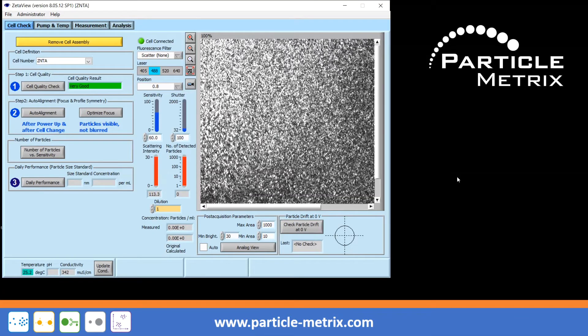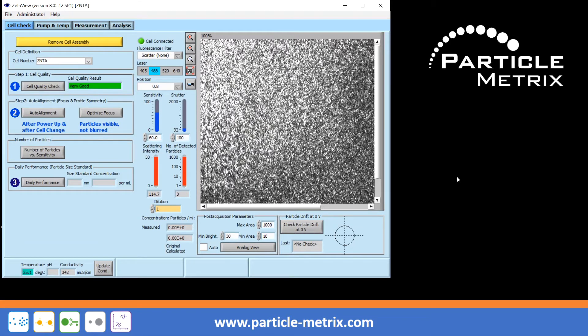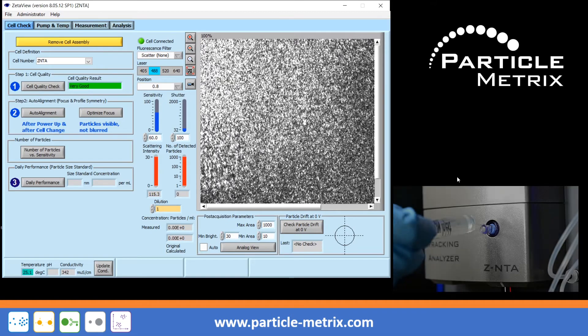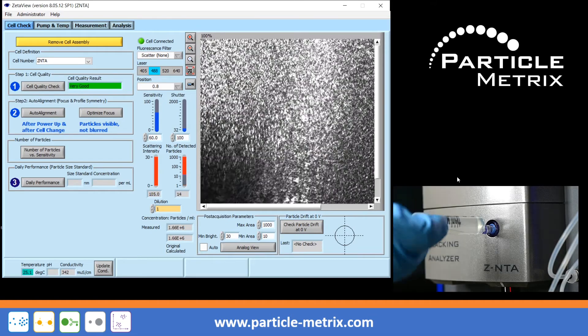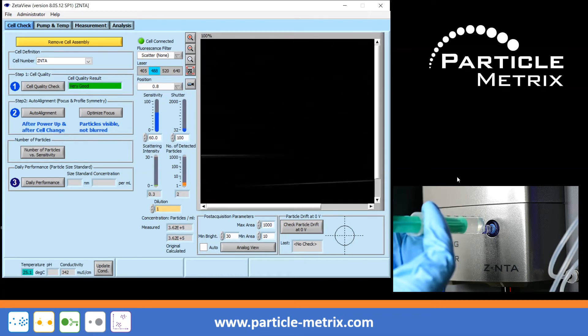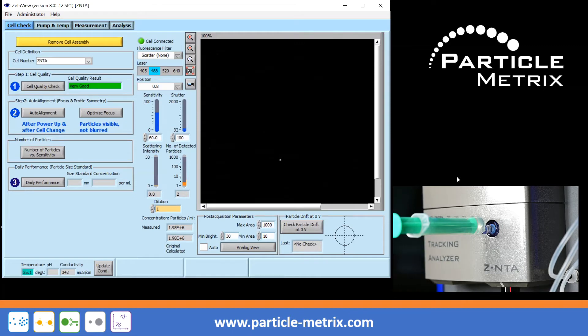If there is an air bubble in the measuring cell and the instrument is only filled with water or buffer, but not with the sample particles, simply inject another 2-5 ml of liquid by applying a little more pressure. In most cases, this will move the air bubble out of the measuring cell.